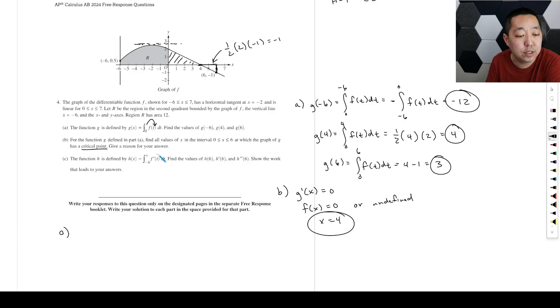The function H is defined by this. Find the values of H of 6, H prime of 6, H double prime of 6, and show your work. So first one is H of 6, which you're literally just going to plug 6 in here. It's going to be the integral of negative 6 to 6, F prime of T dt. Well, how do you do this? You take the antiderivative of this, which is F, and then you plug in 6, and you plug in negative 6, and you subtract them. So that's just literally going to be F of 6 minus, so that's the Y values here. F of 6 is negative 1, and F of negative 6 is 0.5. So this is going to be negative 1.5.